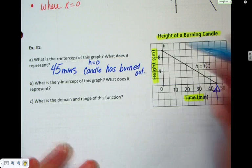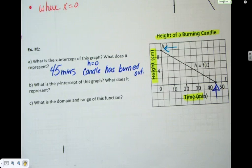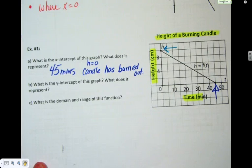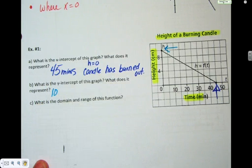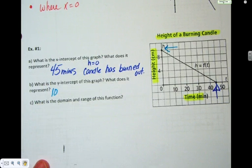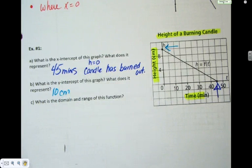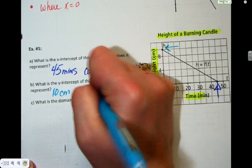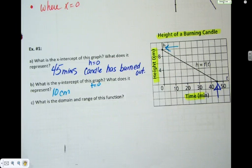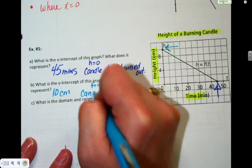The y-intercept is the same point, but on the y-axis. What is the value of the y-intercept? 10. Give me some units. Centimeters. Well, what does that tell us? It tells us the time is zero, but what does that mean in terms of this context? The candle was 10 centimeters high.